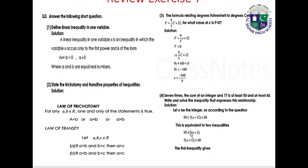Question 3: Answer the following short questions. Define linear inequality in one variable. A linear inequality in one variable x is an inequality in which the variable x occurs only to the first power and is of the form ax plus b not equal to 0, less than 0, or greater than 0, where a is not equal to 0 and a and b are real numbers.